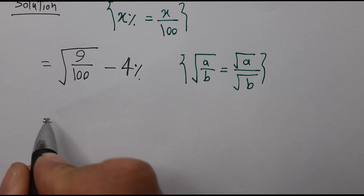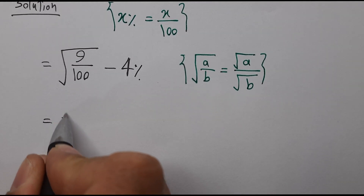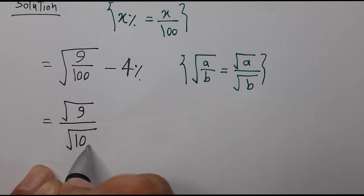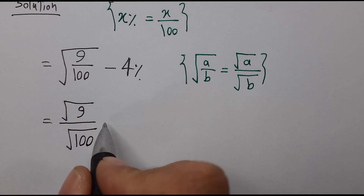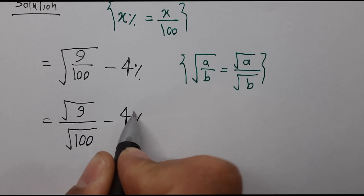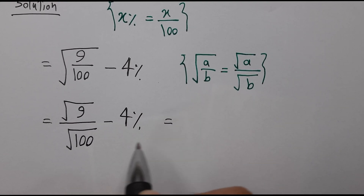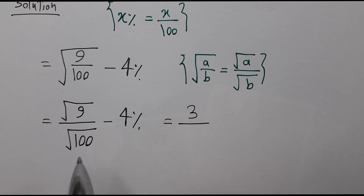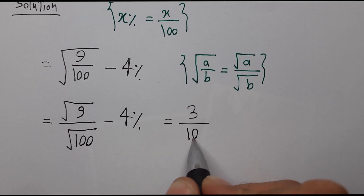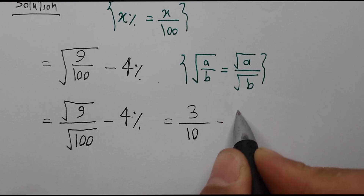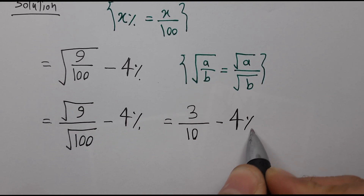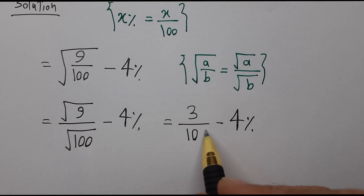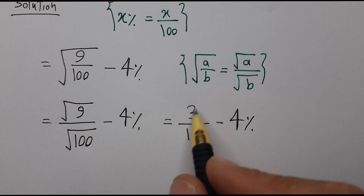So we can write this as square root of nine over square root of one hundred, minus four percent. Here, square root of nine is three, and square root of one hundred is ten, so we have three over ten, minus four percent. We should take three over ten in percentage.